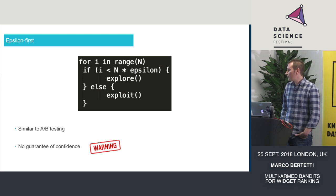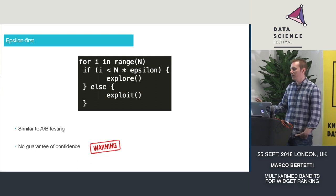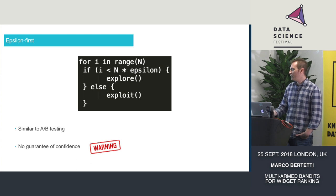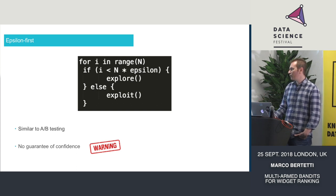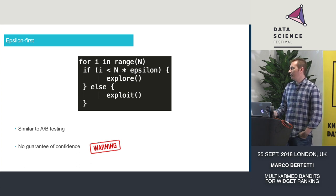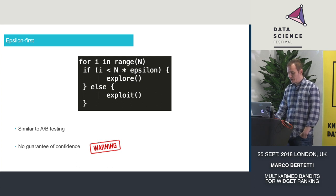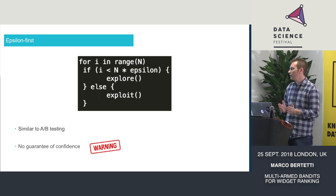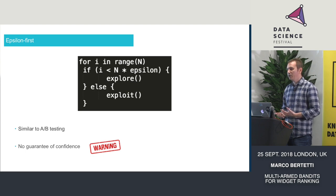Another possible bandit algorithm is Epsilon First, which is very intuitive and gets close to an A-B test — you could think of it as a more automated A-B test. You set a range of maximum views, say a million, and set Epsilon to 10%. From the beginning up to 100,000 views you purely explore, and then after that you exploit all the time. So it's like running an A-B test and then deploying the best choice. However, at no point is there a calculation of confidence intervals or p-values, so even with a high enough Epsilon to collect enough data, you're still not very certain.